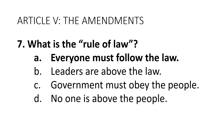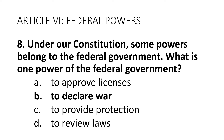Question 7: What is the rule of law? Answer A: Everyone must follow the law. You can also say leaders must obey the law, government must obey the law, or no one is above the law. Question 8: Under our Constitution, some powers belong to the federal government. What is one power of the federal government? Answer B: To declare war. You can also say to print money, to create an army, or to make treaties.